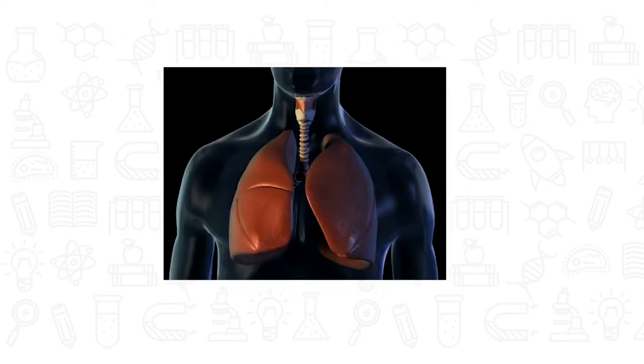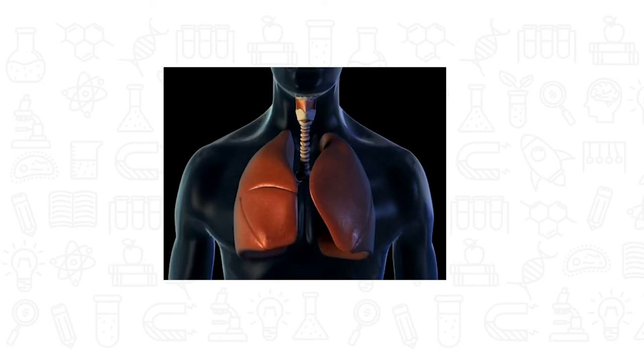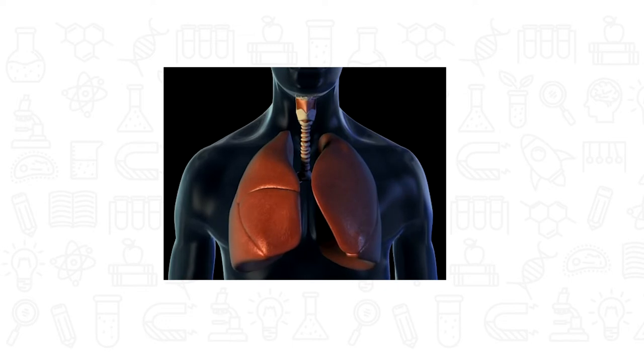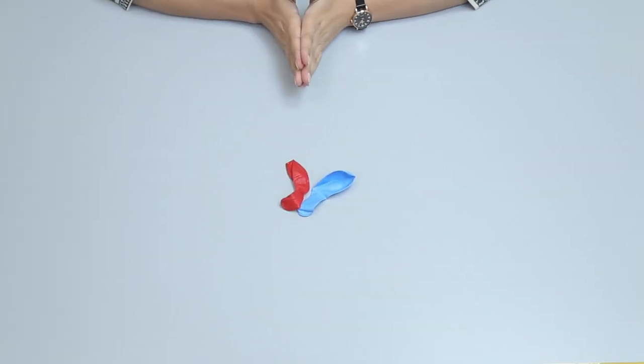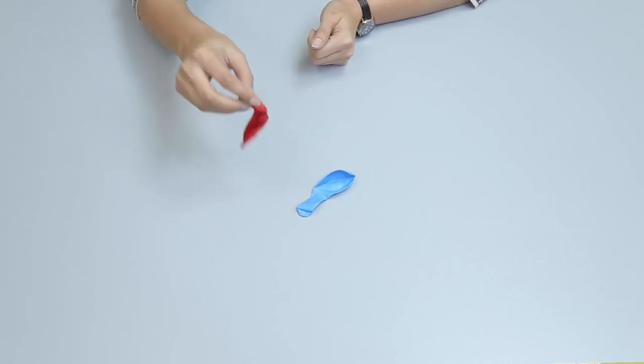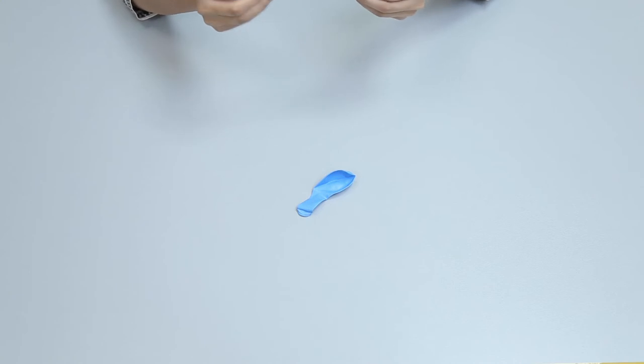When you breathe in and breathe out, lungs get bigger and smaller just like a balloon. Take a balloon from the kit and suppose lungs are just like this balloon. Now blow air from your mouth into the balloon and close its opening with your hand.